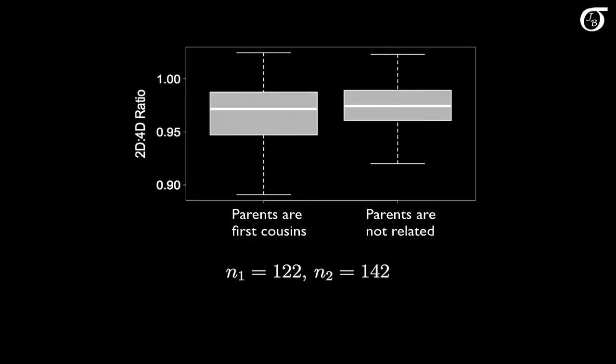Here are the box plots of the 2D to 4D ratio for 122 males born to parents who were first cousins, and 142 males born to parents who were not related. The male children in the study were all of high school or university age when they had this ratio measured. One of the major points of interest in this study was seeing if there was a difference between the groups in the mean 2D to 4D ratio, but the researchers were also interested in a possible difference in the variance. Visually, it looks like the males born to parents who were related may have more variability in their 2D to 4D ratios, compared to males born to non-related parents. There appears to be more spread in the box plot on the left than the box plot on the right, and we'd like to carry out an appropriate statistical analysis.